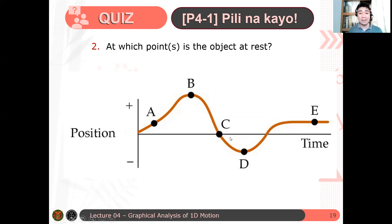Kailan nagiging zero? Dapat ang slope mo ay zero. Kasi in that case, if the slope is zero, the velocity is equal to zero. Because the slope of the tangent line determines your instantaneous velocity, which gives you the value of the velocity at that particular point. Therefore, if the slope is zero, then the velocity is also zero. So hanapin natin yung mga slopes nila. Check natin yung slopes nila.